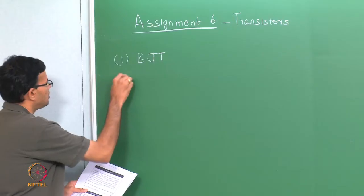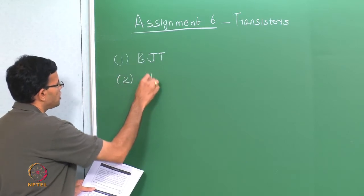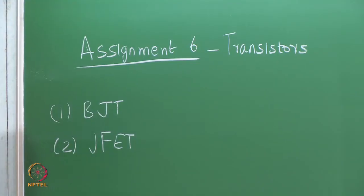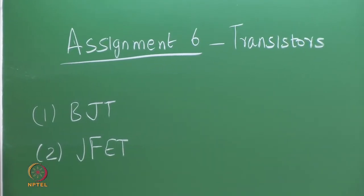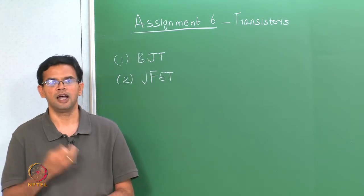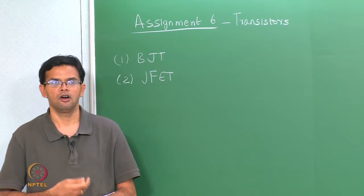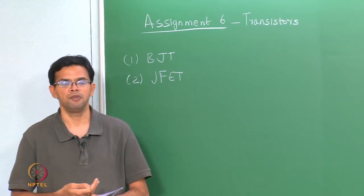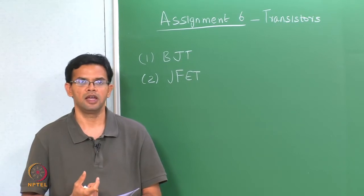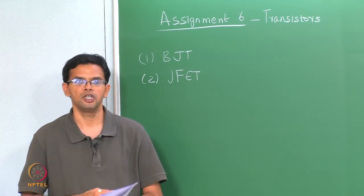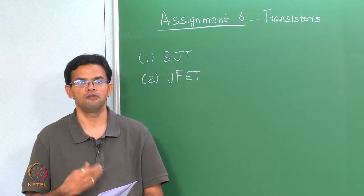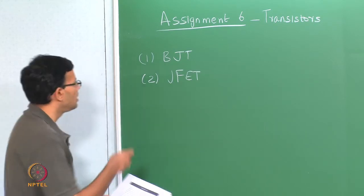The next kind of transistor that we saw was the junction field effect transistor. In this particular type of transistor, there was an existing channel for carrier conduction. This could be a channel for electrons, which will be an N channel, or a channel for holes, which will be a P channel, and basically the width of the channel and hence the amount of current that could flow through it was controlled by an external field.